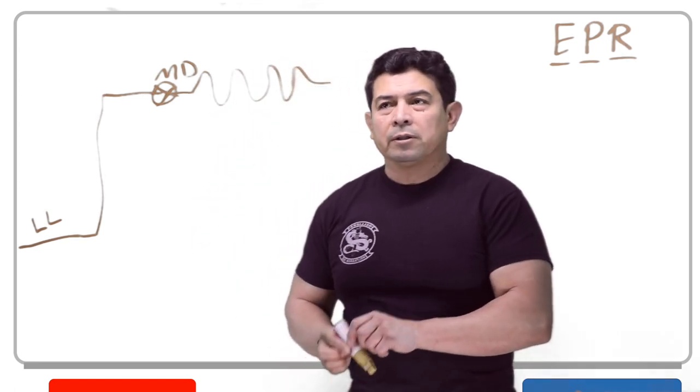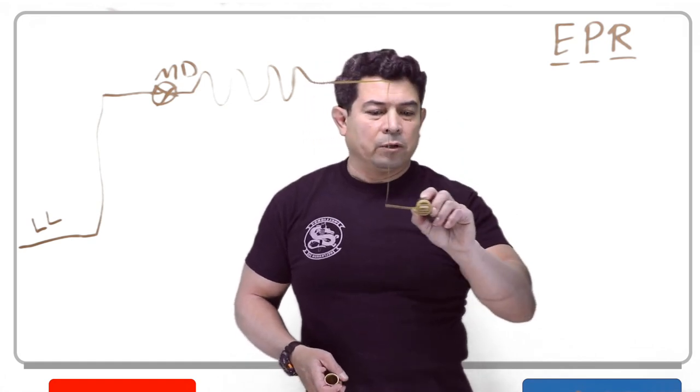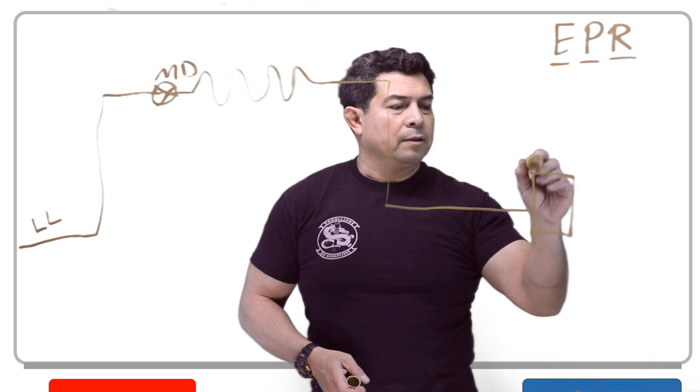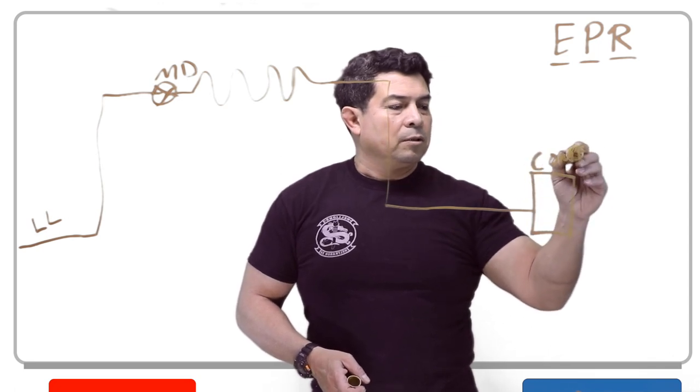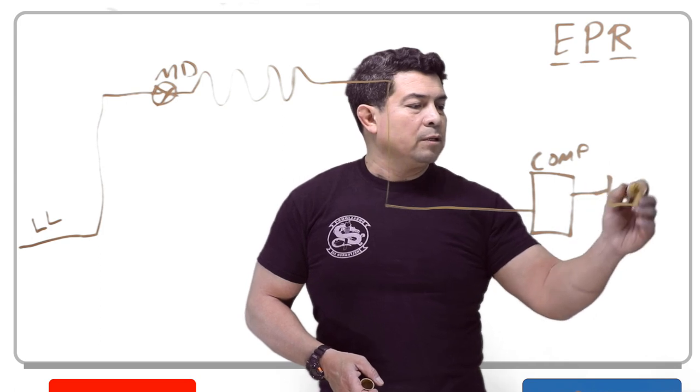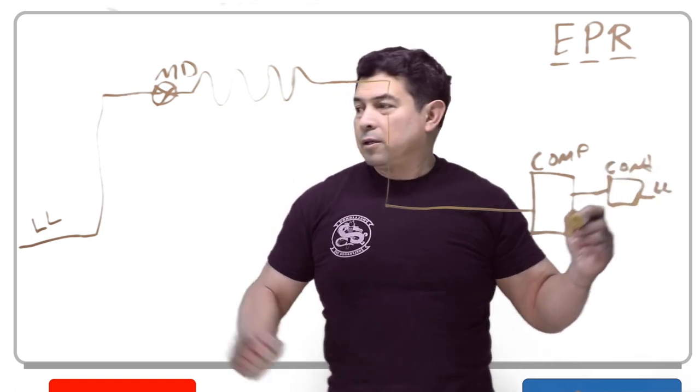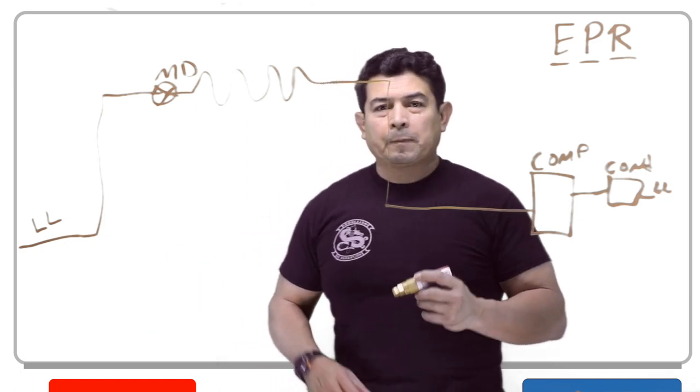This evaporator comes out and goes over to a compressor. The compressor compresses it, sends it out to the condenser, and then it goes out the liquid line back to this side here.